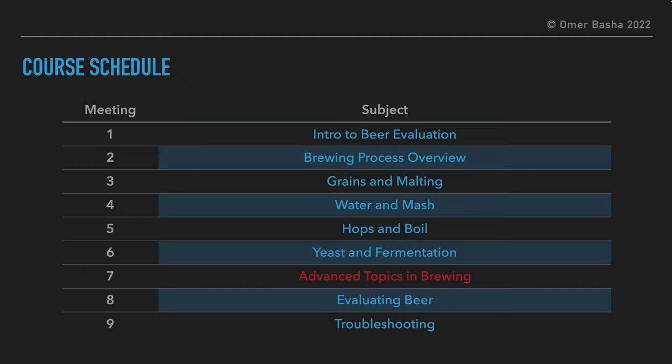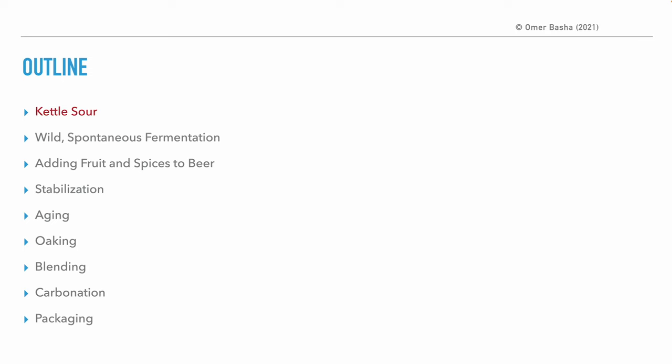This is the seventh presentation of the Beer Evaluation Course, and it is the fifth and last out of five presentations in which we discuss ingredients and processes in beer brewing and their effects on the final beer. The layout of today's presentation: kettle sour, wild and spontaneous fermentation, adding fruits and spices to beer, stabilization, aging, oaking, blending, carbonation, and packaging. We will start by talking about kettle sour.